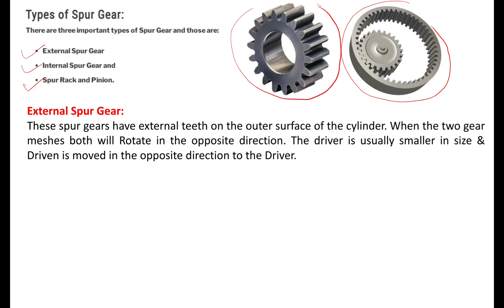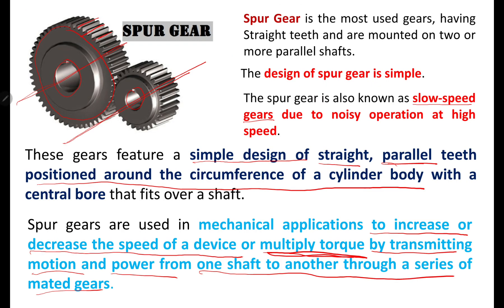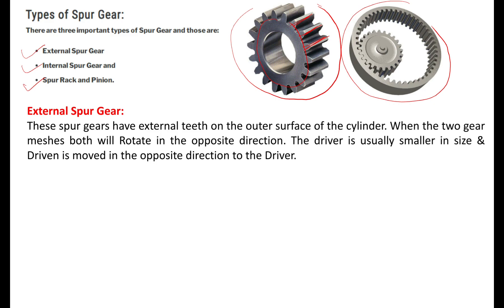External spur gears have external teeth on the outer surface of the cylinder. When two gears mesh, both rotate in opposite directions — if gear number 1 moves clockwise, gear number 2 moves anticlockwise. This is the feature of external spur gear. The driver is usually smaller in size and the driven gear moves in the opposite direction to the driver.